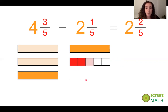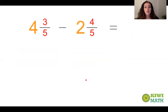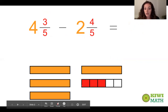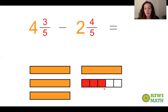Now we're going to move on to when it gets a little more complicated. Let's say we have four and three fifths, just like before, except this time we're taking away two and four fifths. If we focus on the fractional parts, we have three fifths minus four fifths. We only have three fifths — how are we going to take away four fifths?